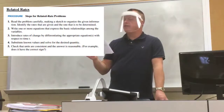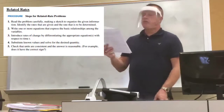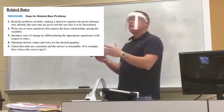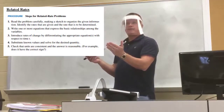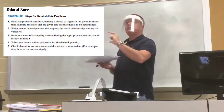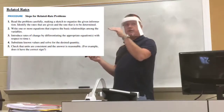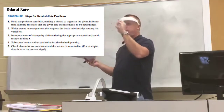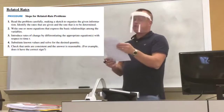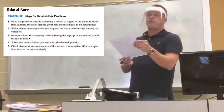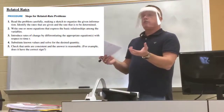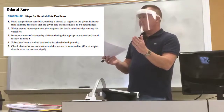Step three: introduce rates of change by differentiating the appropriate equation with respect to time. You've got some formula for whatever works with the problem. Take the derivative of both sides with respect to time — that's where the dy/dx notation comes in handy, because we will always take the derivative with respect to time, as something over dt. Then substitute known values and solve for the desired quantity — if we're looking for the rate of change of area, we solve for dA/dt.